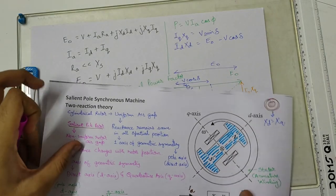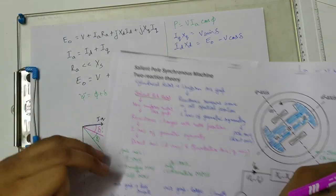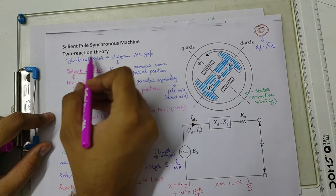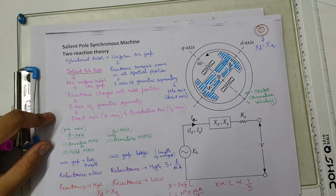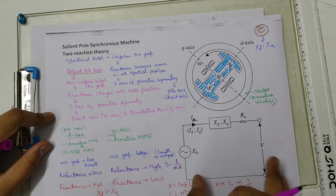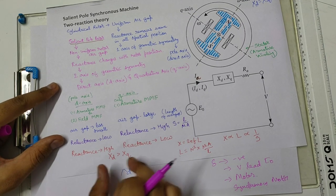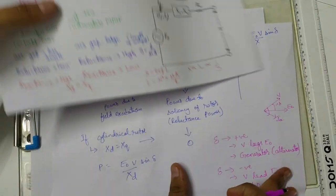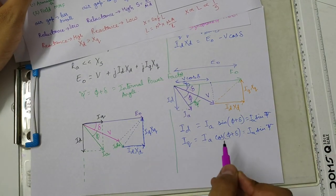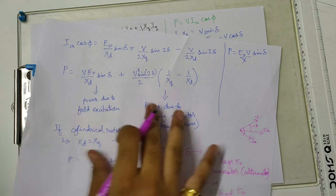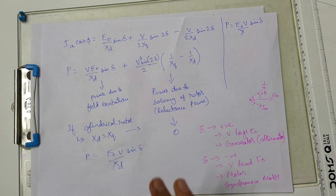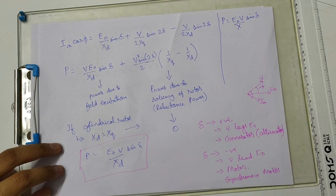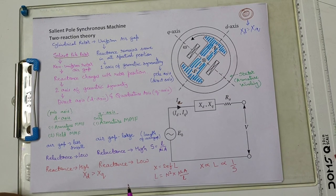This was all about the salient pole synchronous machine. The separation of reactance into two parts — direct axis reactance XD and quadrature axis reactance XQ — is known as the two-reaction theory. Remember that XD is greater than XQ, and remember the phasor diagram and the power equation for a salient pole synchronous generator. We will be using this equation in further concepts of the alternator. Thank you for watching this video.